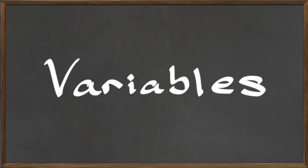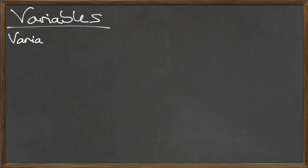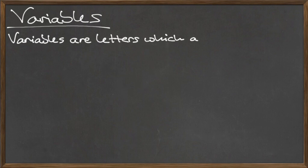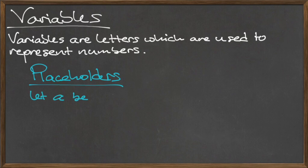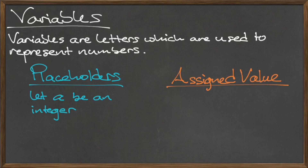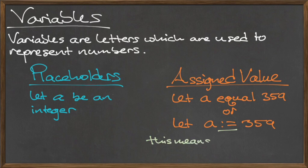In this video we will introduce the concept of variables. A variable is a letter which is used to represent a number. The two advantages for doing this are: we can use the variable as a placeholder for some unknown quantity — for example in the sentence 'let a be an integer' — or we can assign a value to that variable and instead of having to write a number every single time, particularly a very large number, we can instead use the variable name.